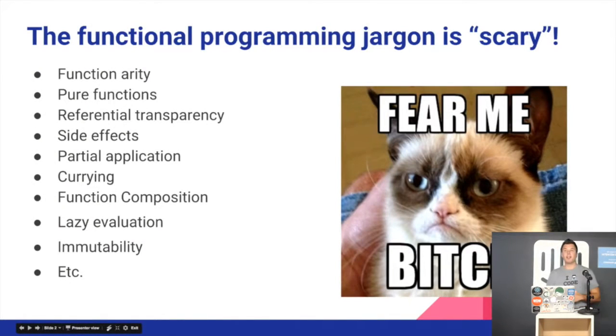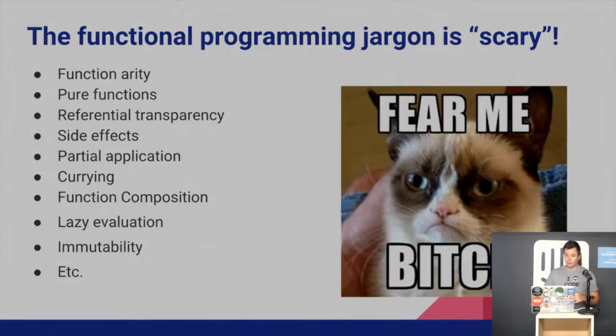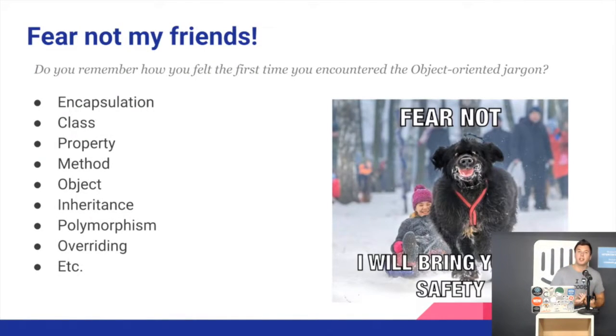The problem of functional programming at the beginning is that it can be very scary, especially when you start reading things like referential transparency or immutability or category theory or even worse things. But I had this fear before because when I started learning object-oriented programming, words like polymorphism were very complicated and very hard to understand. So we have been there before and we shouldn't be scared about functional programming.